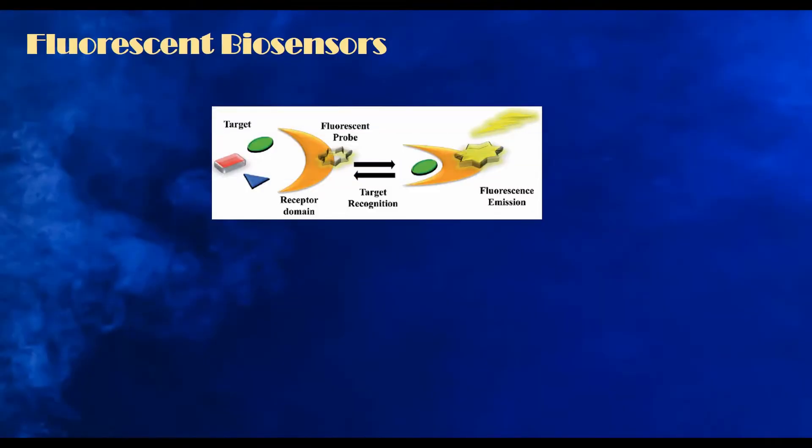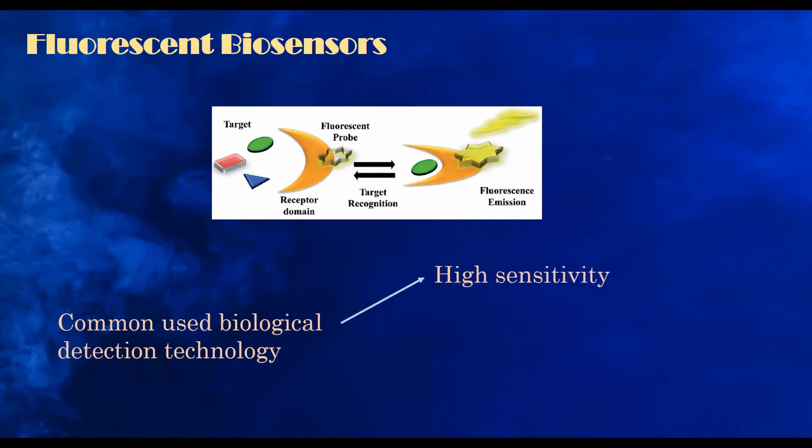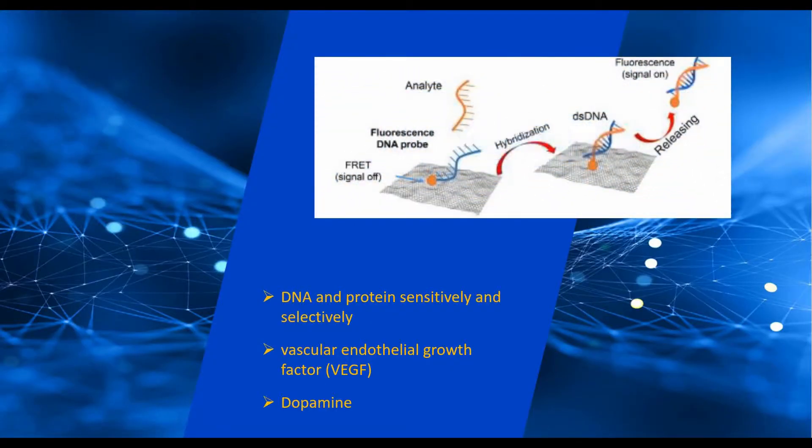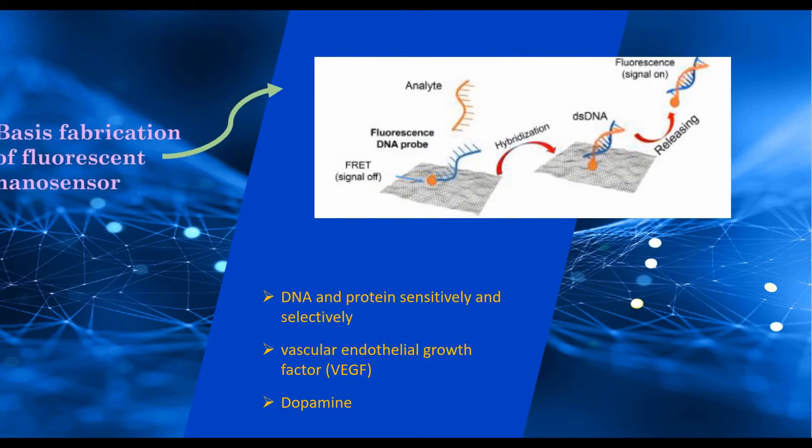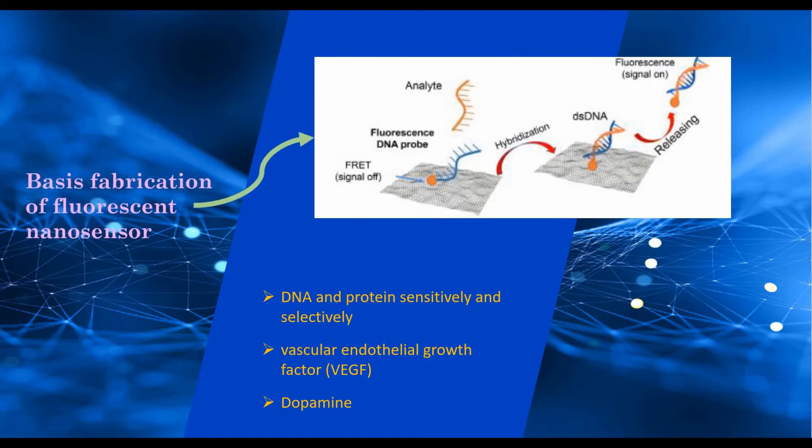Fluorescence biosensors refer to light emitted by fluorescence labels with clear targets. It is a commonly used biological detection technology due to its high sensitivity, low detection limit, and high accuracy.